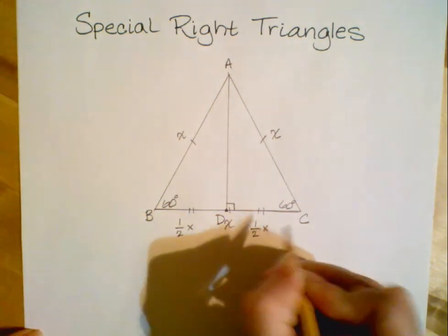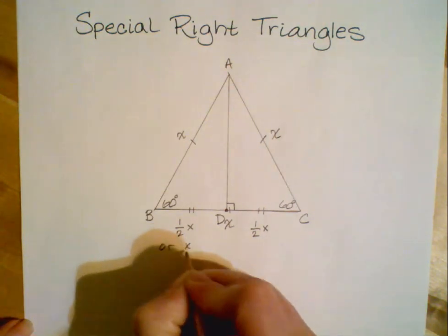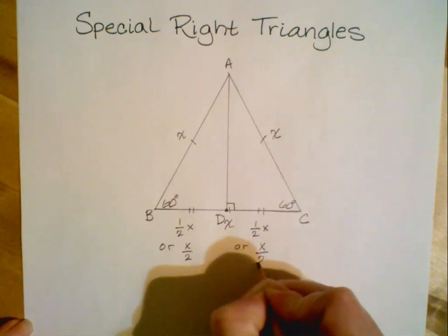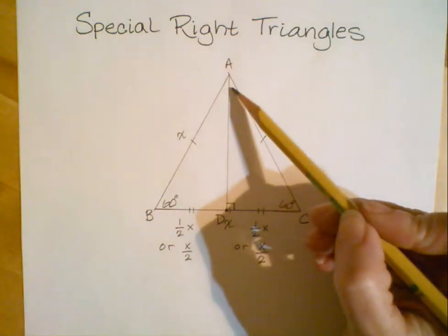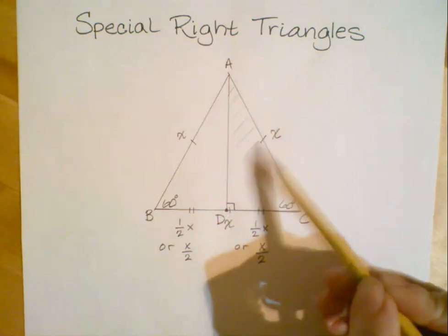Now some will write that as one half x, others will write it as x over two. It's ultimately just whatever form you're more comfortable with. We know they have the same meaning. Now let's talk about where the special right triangle comes into play. The special right triangle here is going to be this rightmost half, triangle ADC.